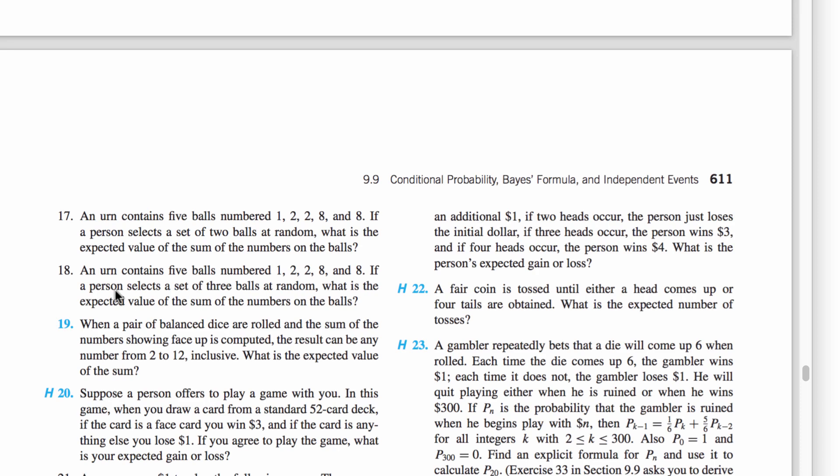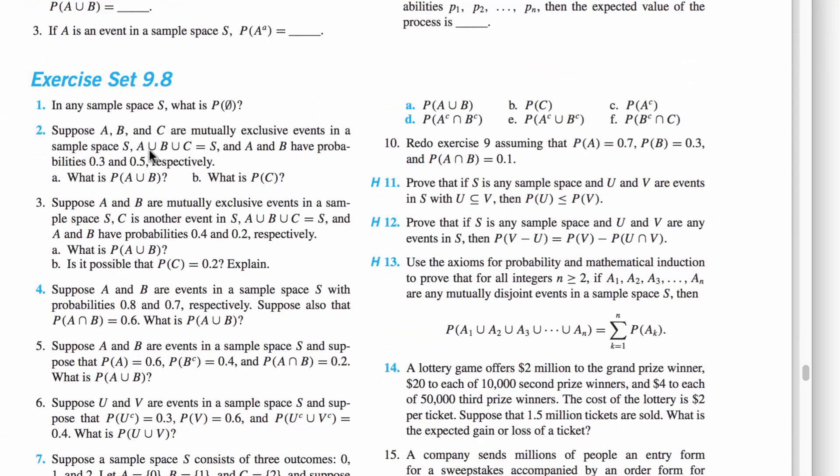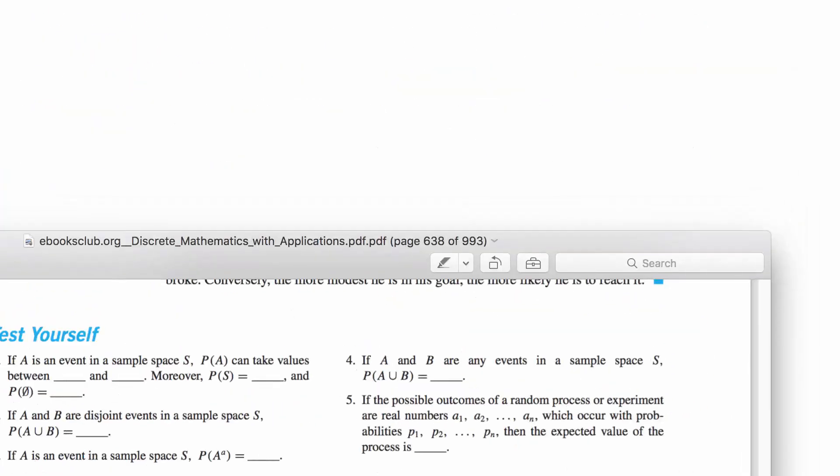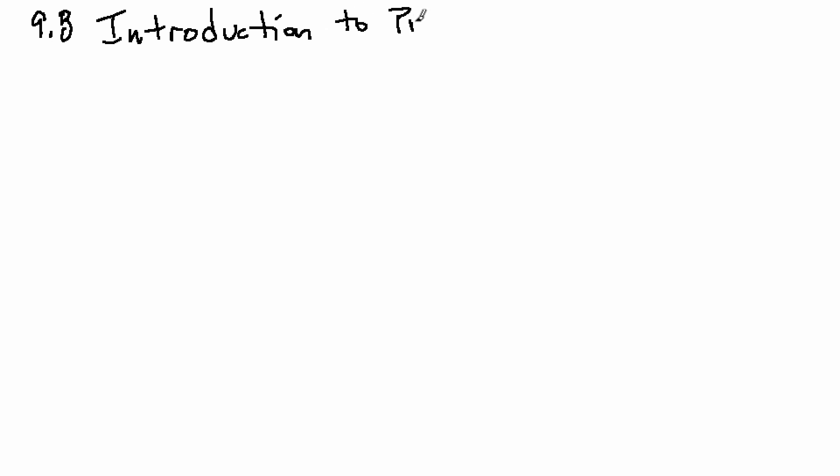Good morning. Here we are — let's just set up a new section. We're wrapping up Chapter 9. We have two sections to deal with in Chapter 9: 9.8 and 9.9. We'll deal with 9.8 right now. 9.8 is an introduction to probability theory. We've already talked about this a bit, so this is not a very long section. I think a lot of the ideas in here we've already seen.